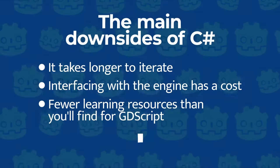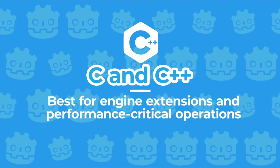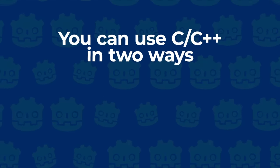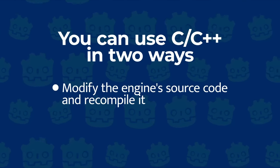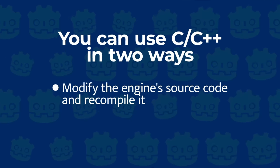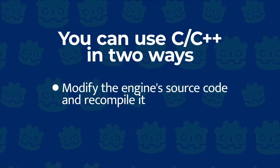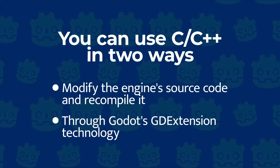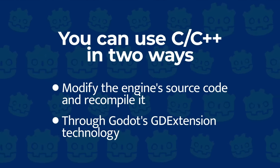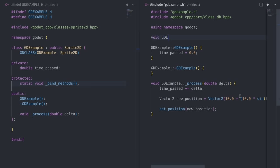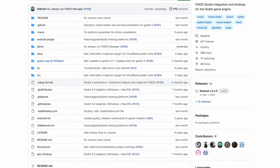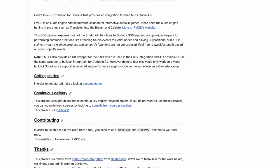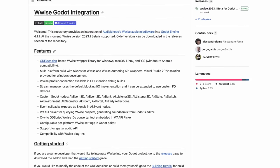Now let's move on to C and C++. These languages offer maximum control, and you can use them in two ways. One is to modify the engine's source code and recompile it — which you can very much do because Godot is open source and it's yours to modify and adapt to your needs. You can also use C or C++ code without recompiling the engine through Godot's GD Extension technology. You can learn how to do so in the official documentation; links are below the video. Using GD Extension isn't beginner-friendly yet, but there are plans to make it more accessible as the technology matures. In terms of development, C and C++ are most suited to create plugins and libraries for Godot, or to modify the engine and adapt it to a specific project or workflow.